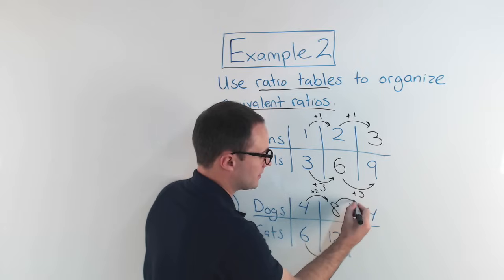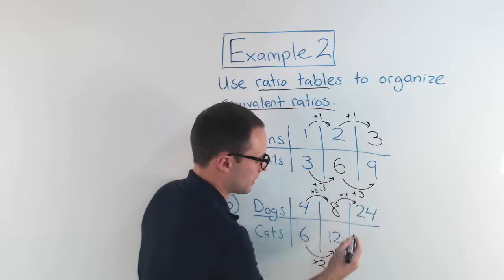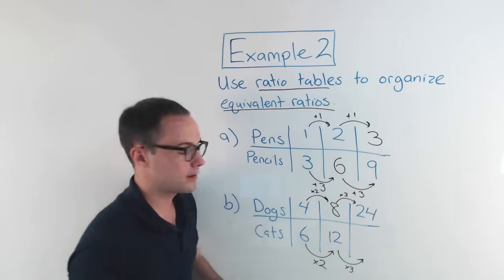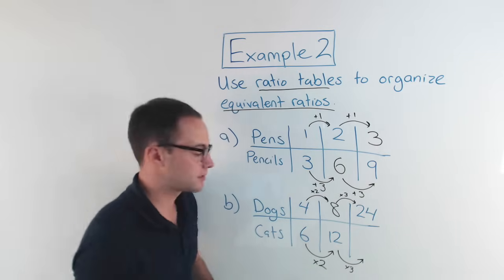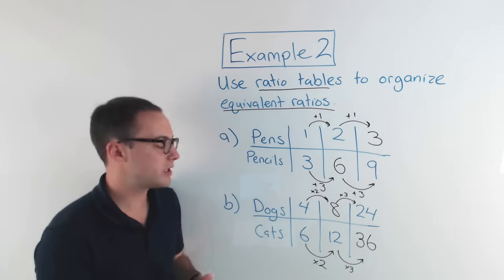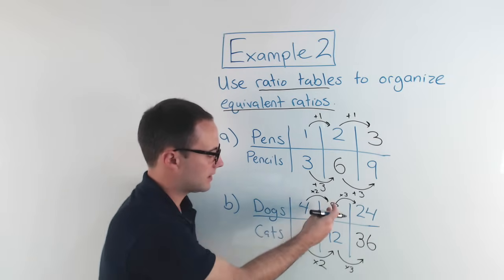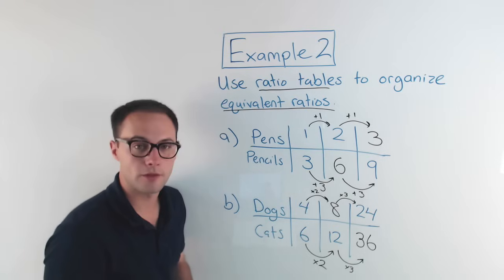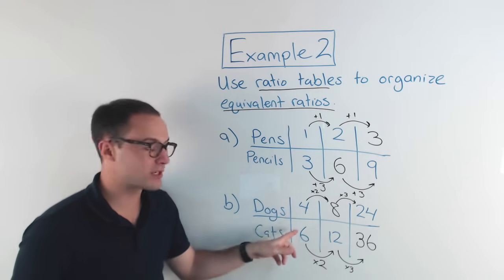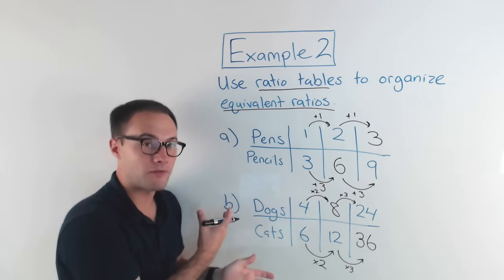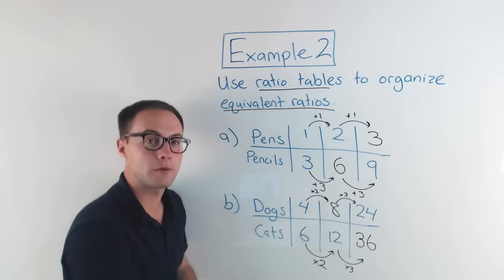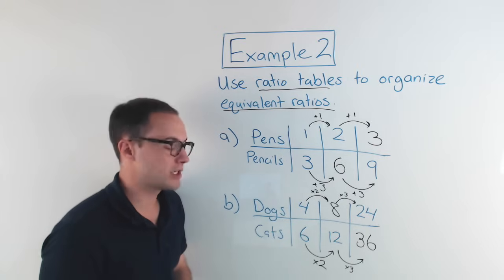Same thing here — from eight to twenty-four, I times by three, so I also times the twelve by three: twelve times three is thirty-six. Those are all equivalent ratios: four to six, eight to twelve, and twenty-four to thirty-six. And I could also go the other way — four to six, we could divide both by two and get two to three, which is also an equivalent ratio.